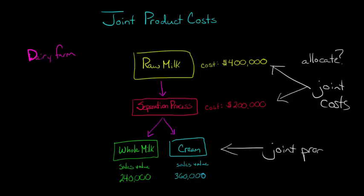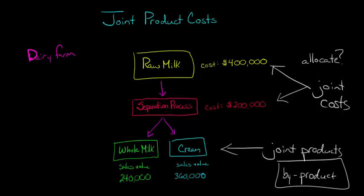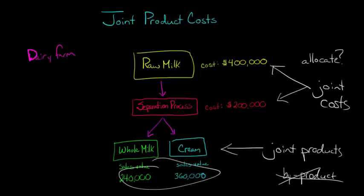Sometimes you'll hear of something called a by-product. A by-product is usually when one of the products has a really low sales value relative to the other products — for example, sawdust when you're making lumber. But in this case we don't have any by-products; we've just got a couple of joint products, because they have sales values that are very close to one another.